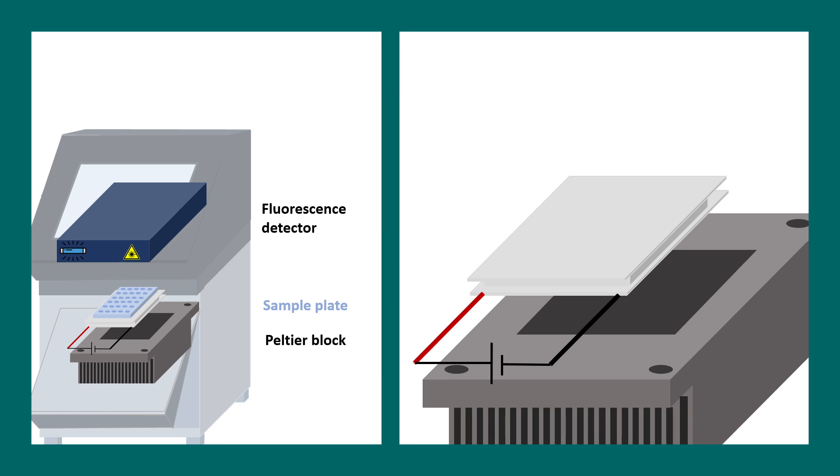The Peltier block is used to change the temperature of the machine. Whenever we want to change the temperature gradually and rapidly, Peltier devices are used. For example, we use similar devices in PCR.